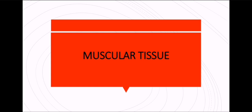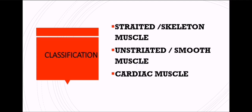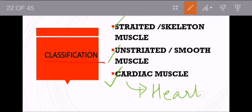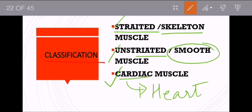We have completed the epithelial tissue and are now heading towards muscular tissue. Like epithelial tissue, muscular tissue is divided into various types: striated, unstriated, and cardiac. The word cardiac itself suggests heart muscles. Striated muscles are also called skeletal muscles; unstriated are also called smooth muscles; and cardiac muscles are also called heart muscles.